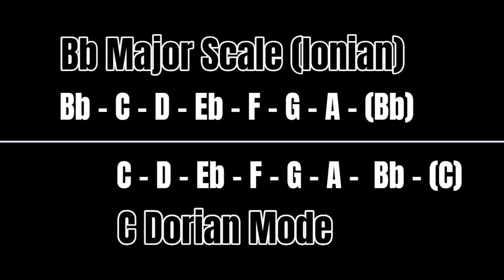We're looking at C Dorian, and that basically means when we move back a whole step it's going to reveal the modal parent scale — and that's Bb major. I'm going to flash an image here showing Bb major written out, and then right below that the same scale started on C, which is going to reveal C Dorian. Check out this image right here.